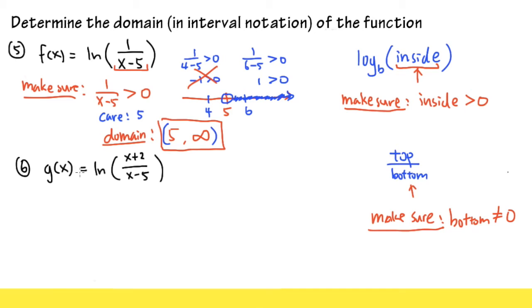Number 6. We have this one. This is also slightly different than number 5. And you will see why this method works much better. We have ln of x plus 2 over x minus 5. And the inside is this fraction that we are looking at, right? Let's make sure the inside, x plus 2 over x minus 5, it has to be greater than 0.